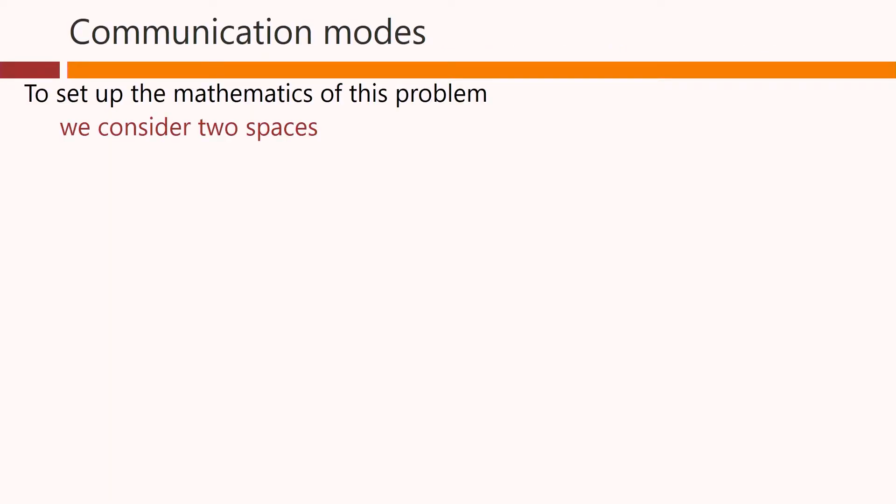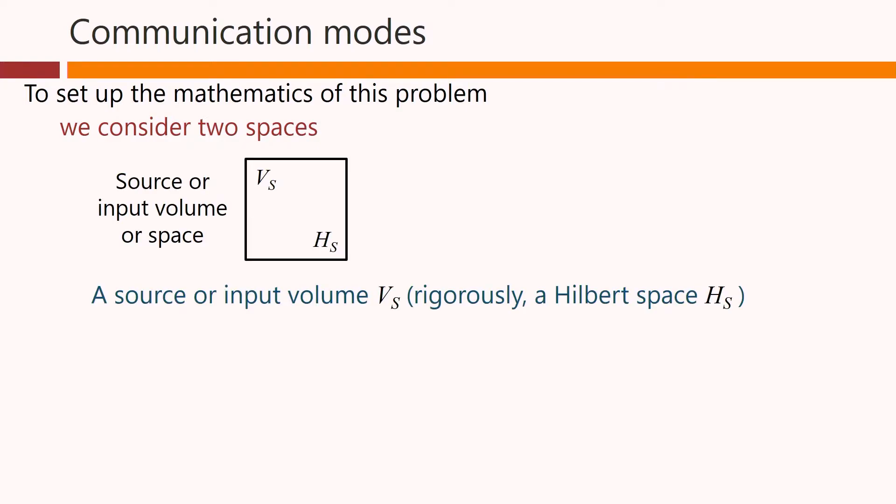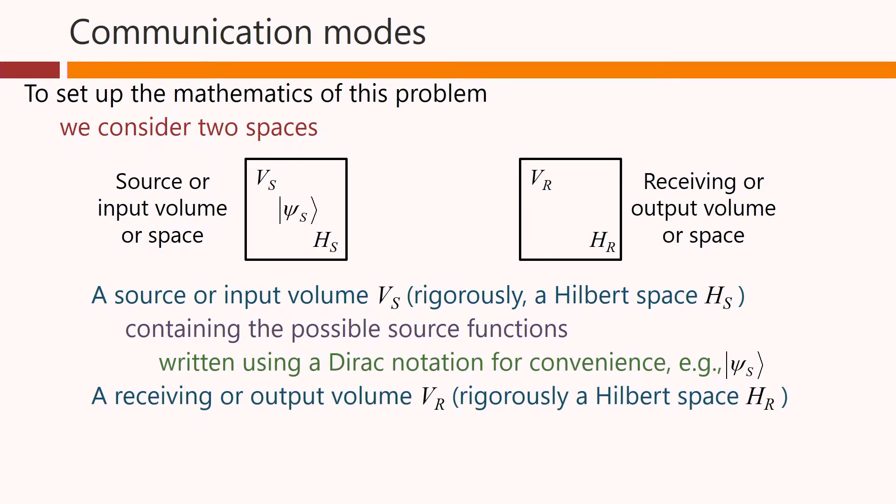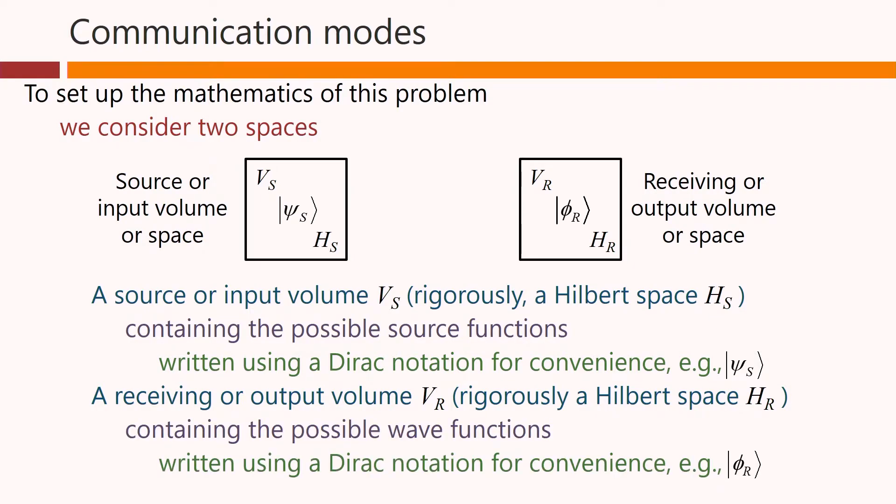To set up the mathematics of this problem, we consider two spaces. First of all, a source or input volume or space. This space can contain the possible source functions, and we'll write these using a Dirac notation for convenience, as I've shown here for this function ψ_s, representing some source. Similarly, we will have a receiving or output volume v_r, which will contain the possible wave functions, and we will write those functions using a Dirac notation for convenience. Here, φ_r.